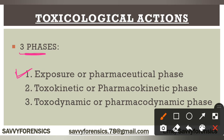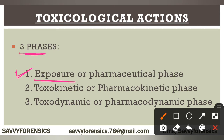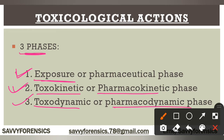So here, when any poison has exposure, we call it the exposure phase. Second is your toxokinetic phase, also called pharmacokinetic phase. Third is your toxodynamic or pharmacodynamic phase. So these are the three phases in the toxicological action of any poison.